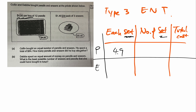For the erasers, it's $1.40 per pack. The word 'per pack' — pack and box means 'set.' Next time if you see 'box' and 'pack,' just write 'set' above to replace. So for erasers it's $1.40.